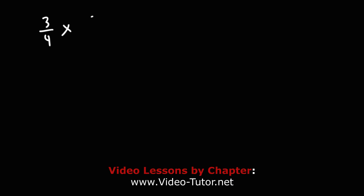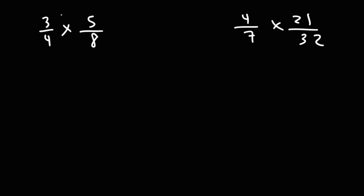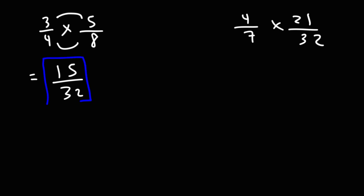Now let's talk about how we can multiply two fractions. We kind of did this in the previous two examples. When multiplying two fractions you need to multiply across. So here we have 3 times 5 which is 15, and 4 times 8 which is 32. We can't really simplify this fraction so 15 over 32 is the answer. That's how you multiply two fractions — you simply multiply across.